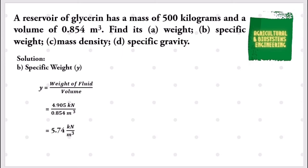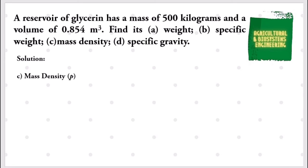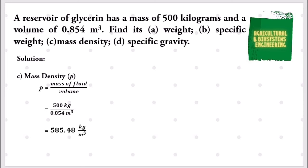Next, let us solve for the value of our mass density. The formula is: mass density equals mass of fluid divided by the volume. We substitute the values: 500 kilograms divided by 0.854 cubic meters. We have a final value for our mass density of 585.48 kilograms per cubic meter.